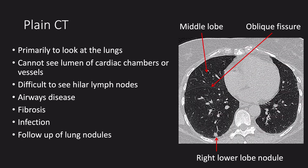A plain CT is used primarily to look at the lungs. You cannot see the lumen of the cardiac chambers or vessels. Because of this, it can sometimes be difficult to see structures at the hilum, such as lymph nodes. Plain CT is great for diagnosing diffuse lung diseases such as pulmonary fibrosis and for following up lung nodules.